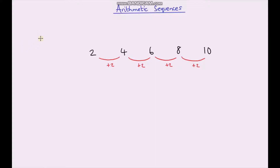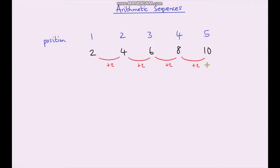So here we've got the position number: first term, second term, third term, fourth term and fifth term. You can see that we're just multiplying our position by two to get our term — one times two, two times two, three times two, four times two and five times two. So we can say that in order to get any term in our sequence we just multiply the position number by two. For example, if we wanted to work out the tenth term we just do ten times two and that gives us twenty, so twenty will be the tenth term in our sequence.